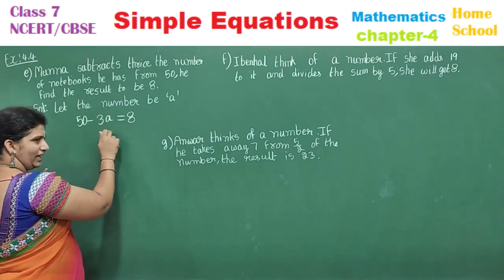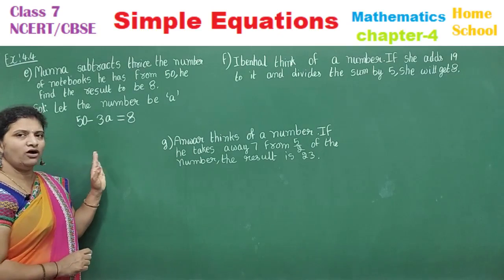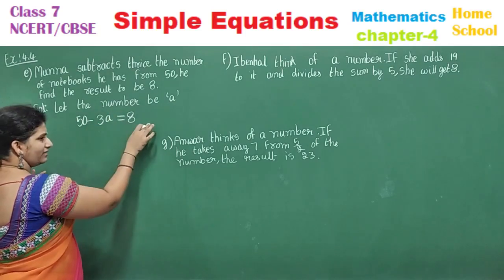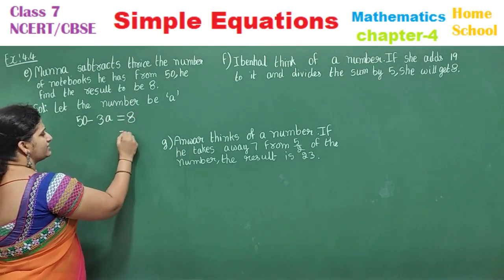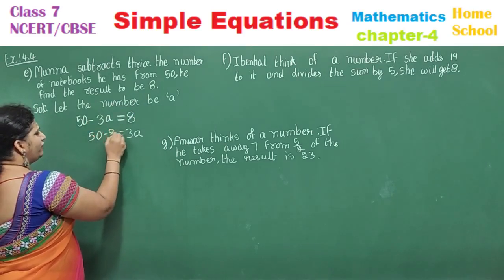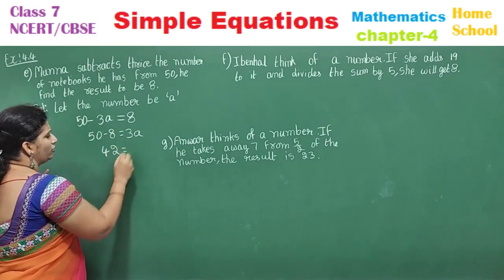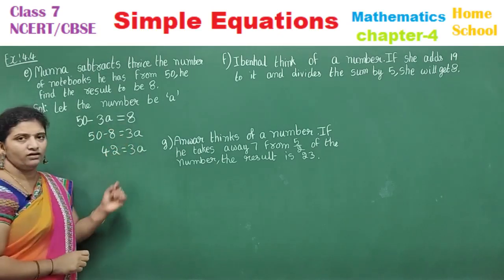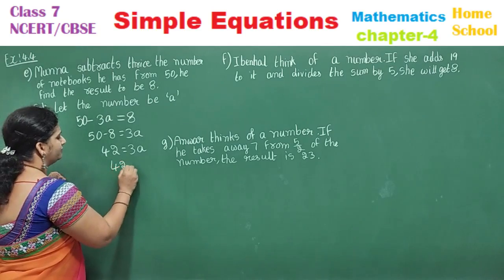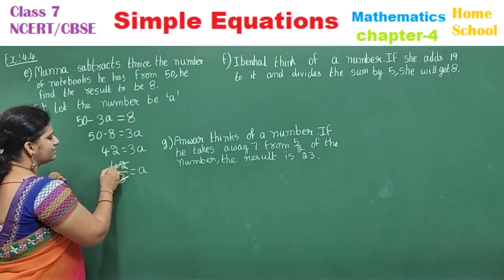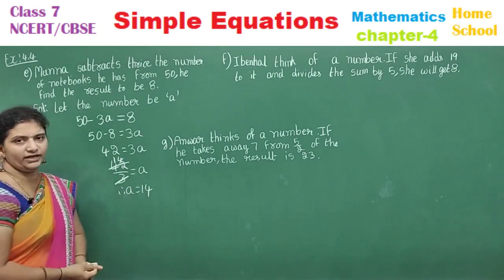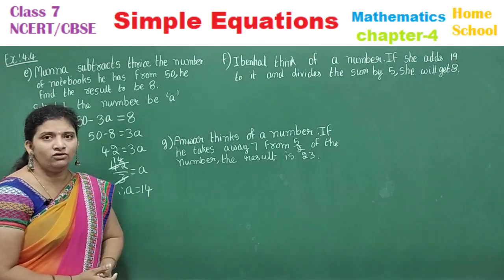The variable is negative here — variable should always be positive, so transpose: bring 3a to the left and 8 to the right. 50 − 8 = 42, so 3a = 42. Divide by 3: a = 42 ÷ 3 = 14. Therefore a = 14.